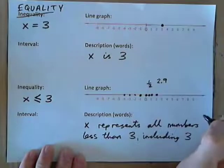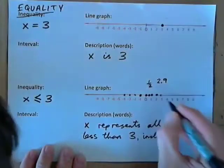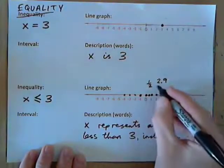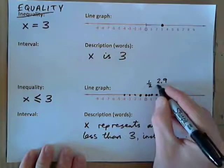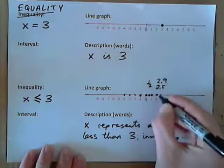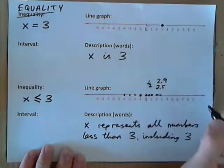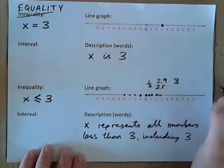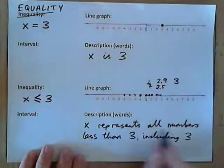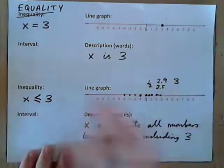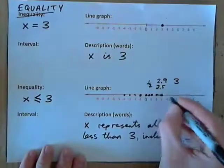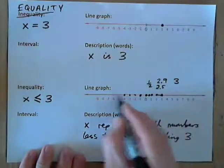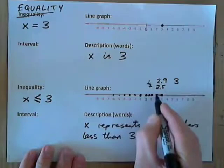Is 2.9 less than 3? There it is — 2.9. And also, say, 2.5 — that's right there. So, it represents all the decimals. Does x represent the number 3? Well, it represents all numbers less than 3 including 3. x is less than or equal to 3, so it does — it represents 3 also. And it represents all these numbers and all the numbers in between.